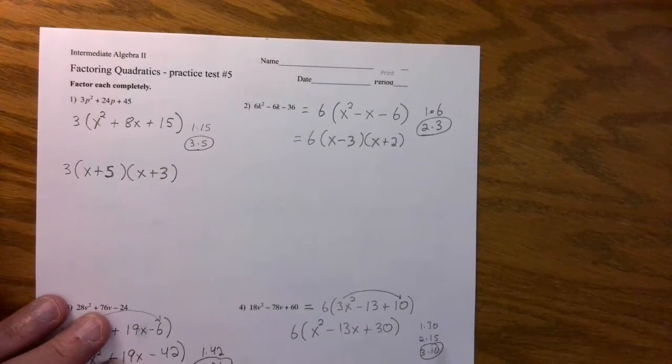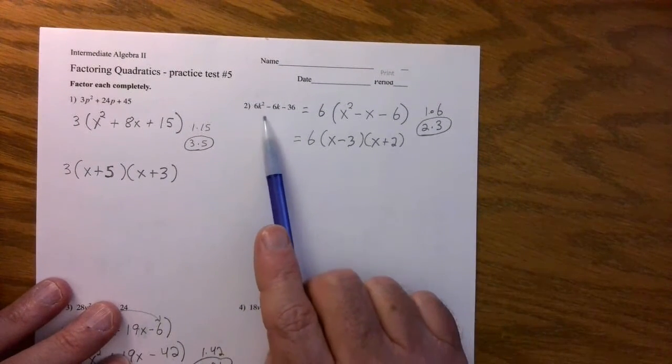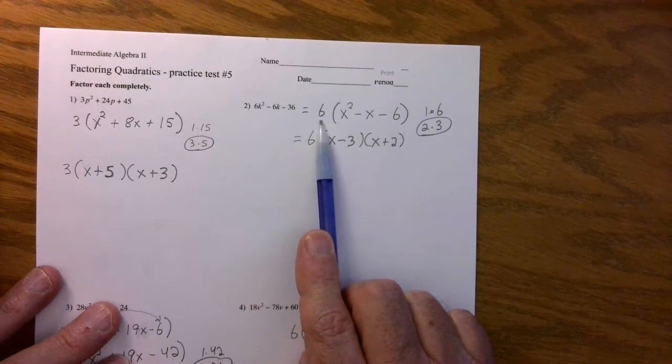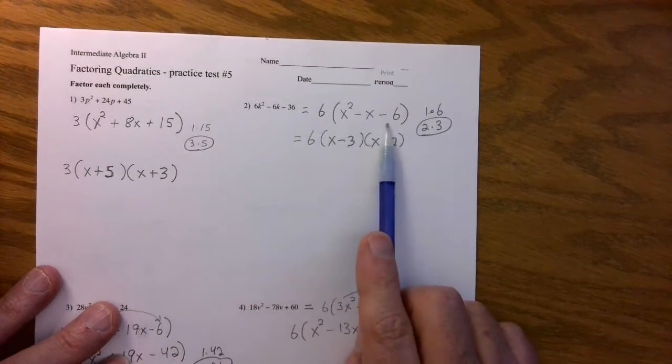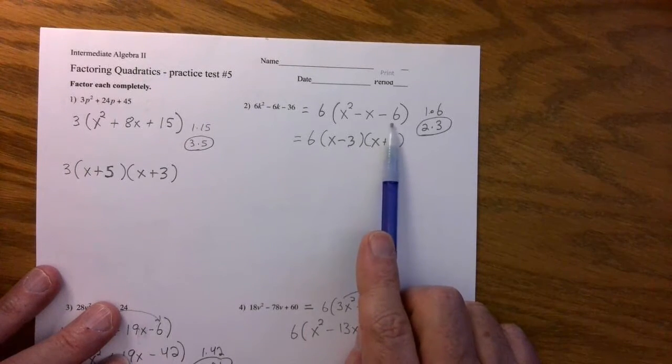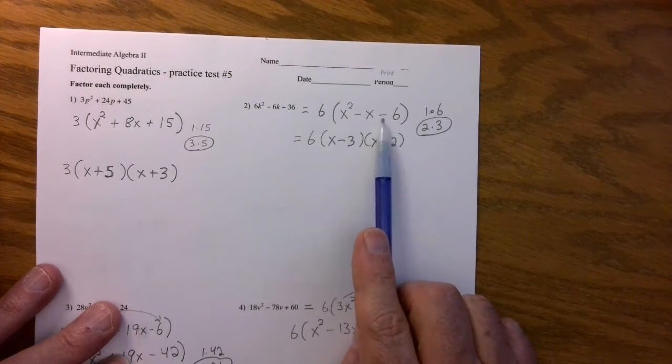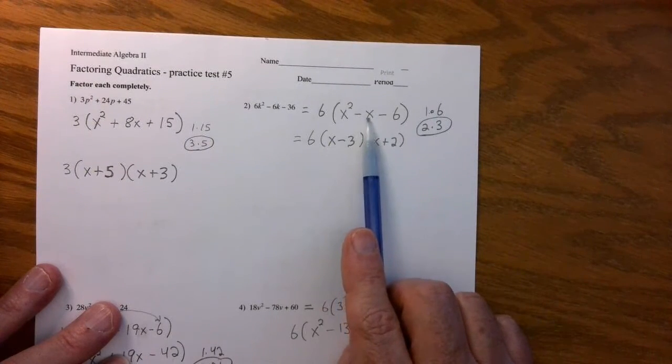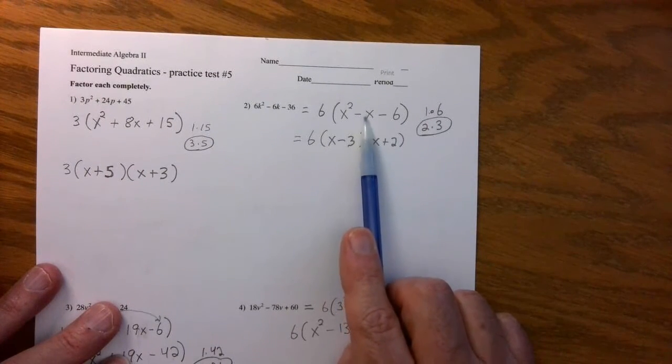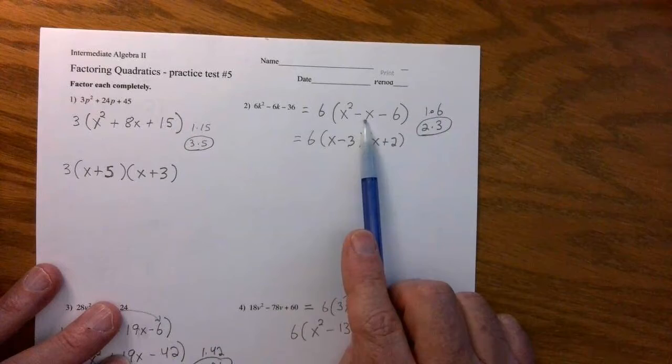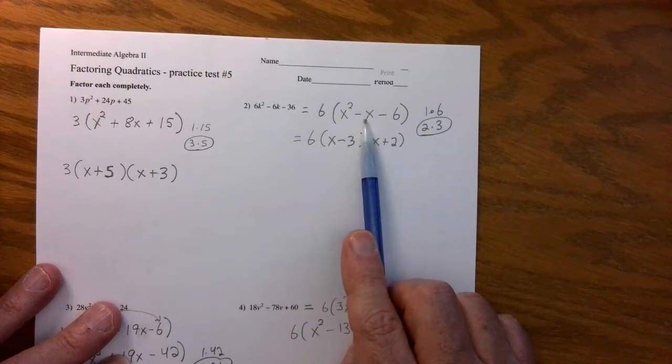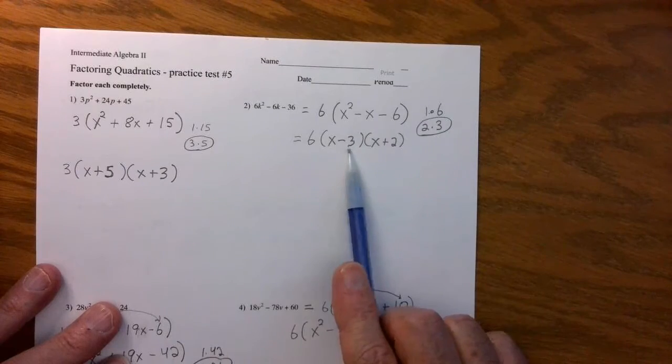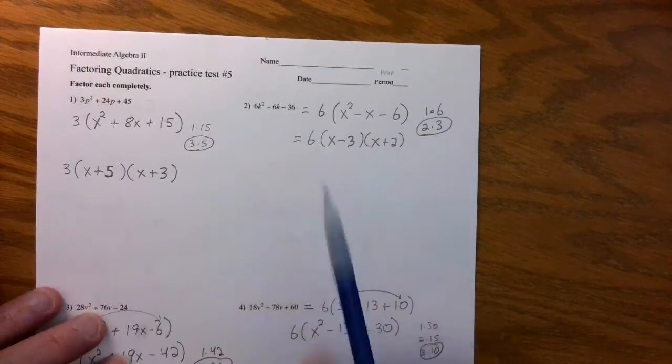Problem two, the same thing. Six is the greatest common factor. Go ahead and take it out. Be careful of the six. We're looking for two numbers. The difference between them, when you subtract them, you get one. In front of this x, there's nothing here, so there's a one here. When you subtract them, you get one. So it's two and three. Make sure the three ends up with the negative number, and the six still stays in front here.